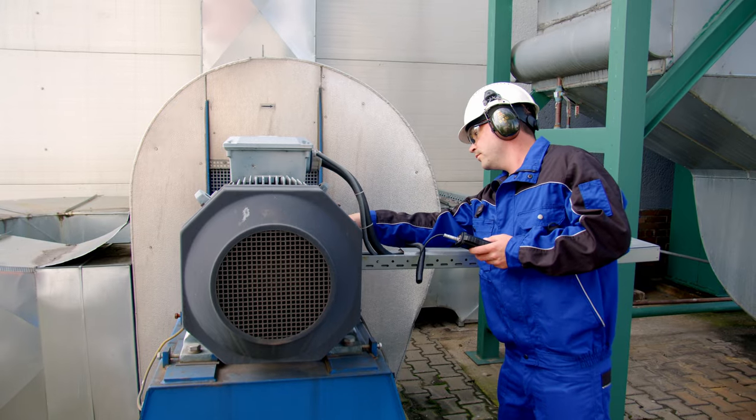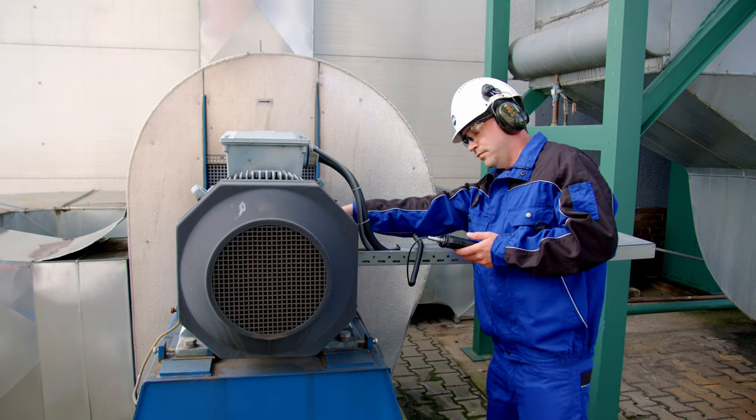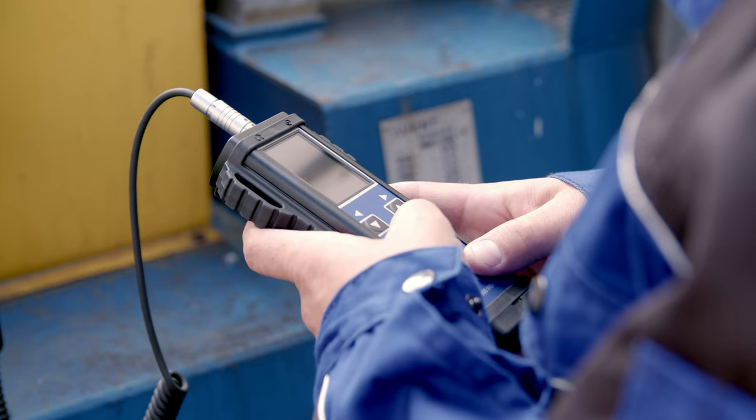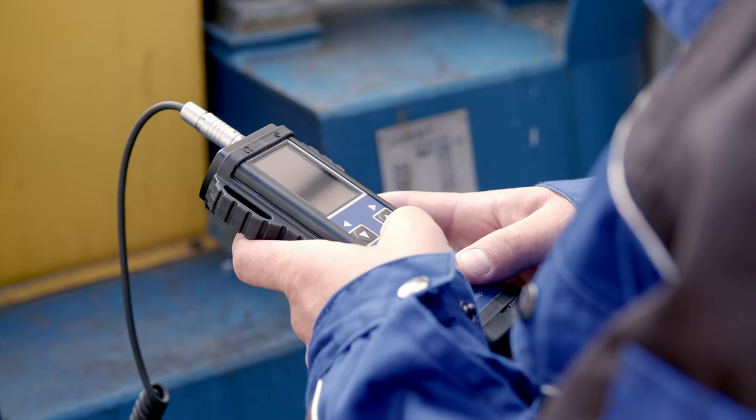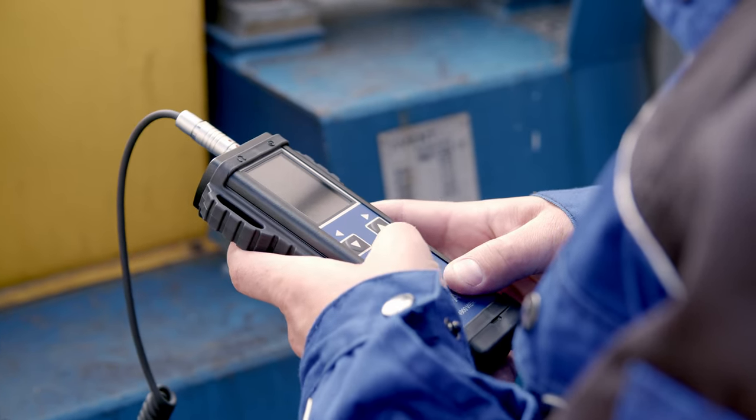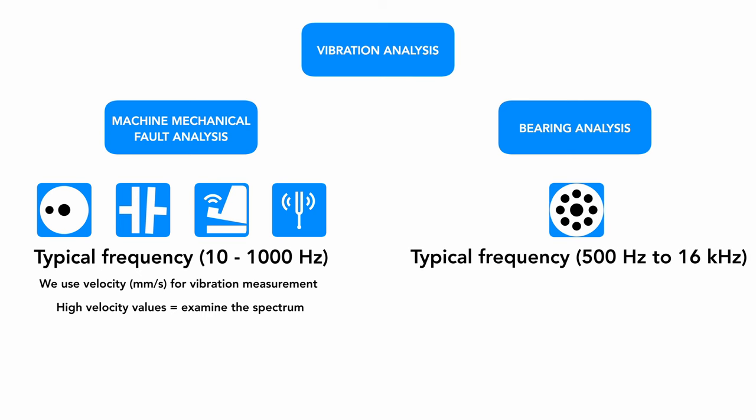The other aspect of vibration analysis is bearing analysis. Bearing faults occur in the high frequency range, 500 Hz to 16 kHz, and are represented by the bearing vibrations, a tone caused by ball impacts. Acceleration, g, is used to measure vibration. An increase in vibrations in the high frequency spectrum indicates a worsening bearing condition.